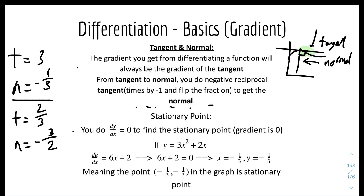For stationary points, you set dy over dx equals 0 to find them. The stationary point is where the gradient equals 0. On a quadratic curve, the stationary point is the maximum or minimum point. For example, if y equals 3x squared plus 2x, you differentiate to get dy over dx.